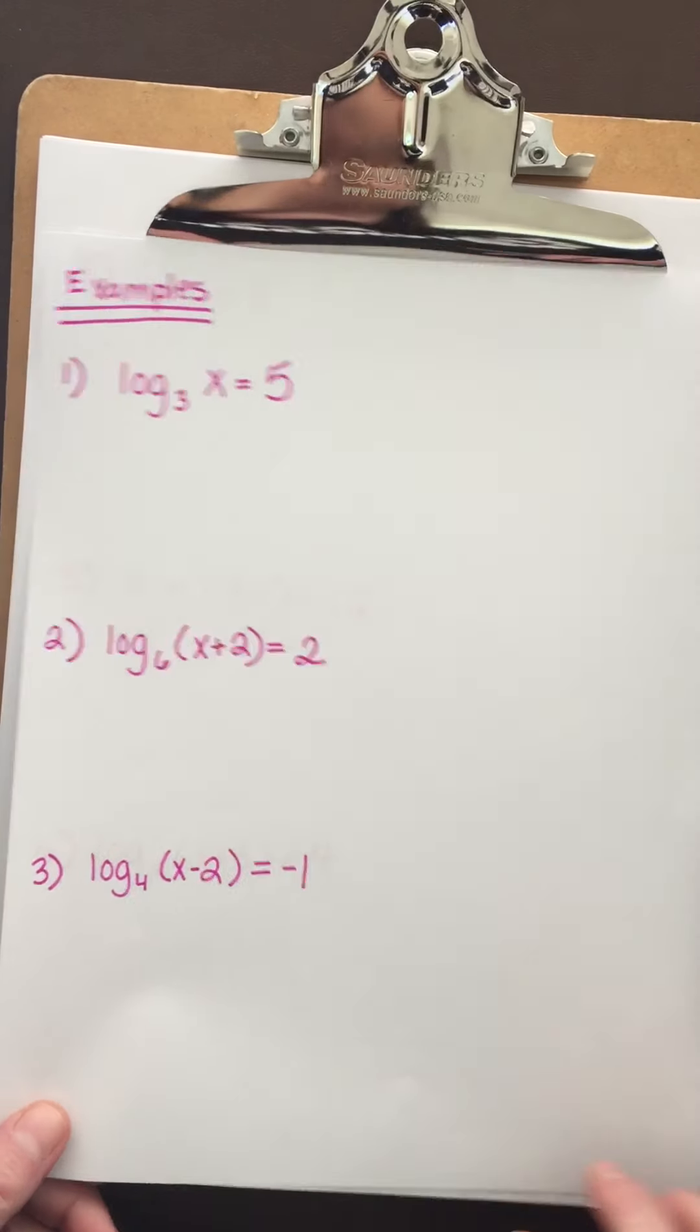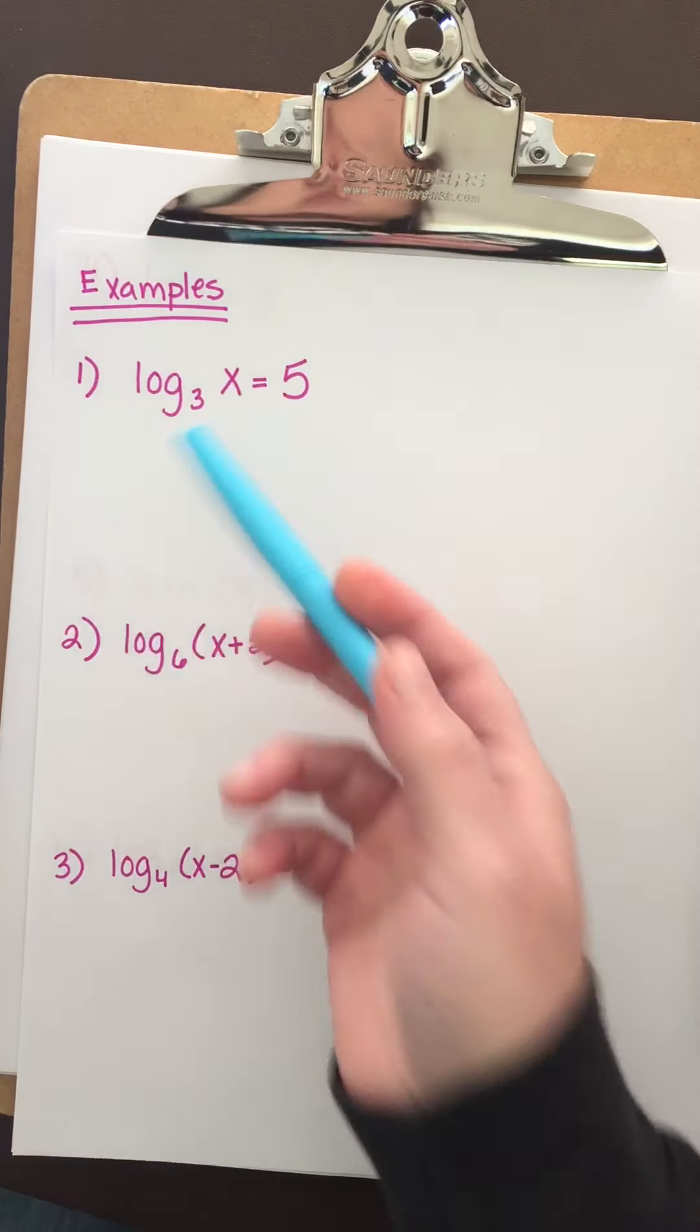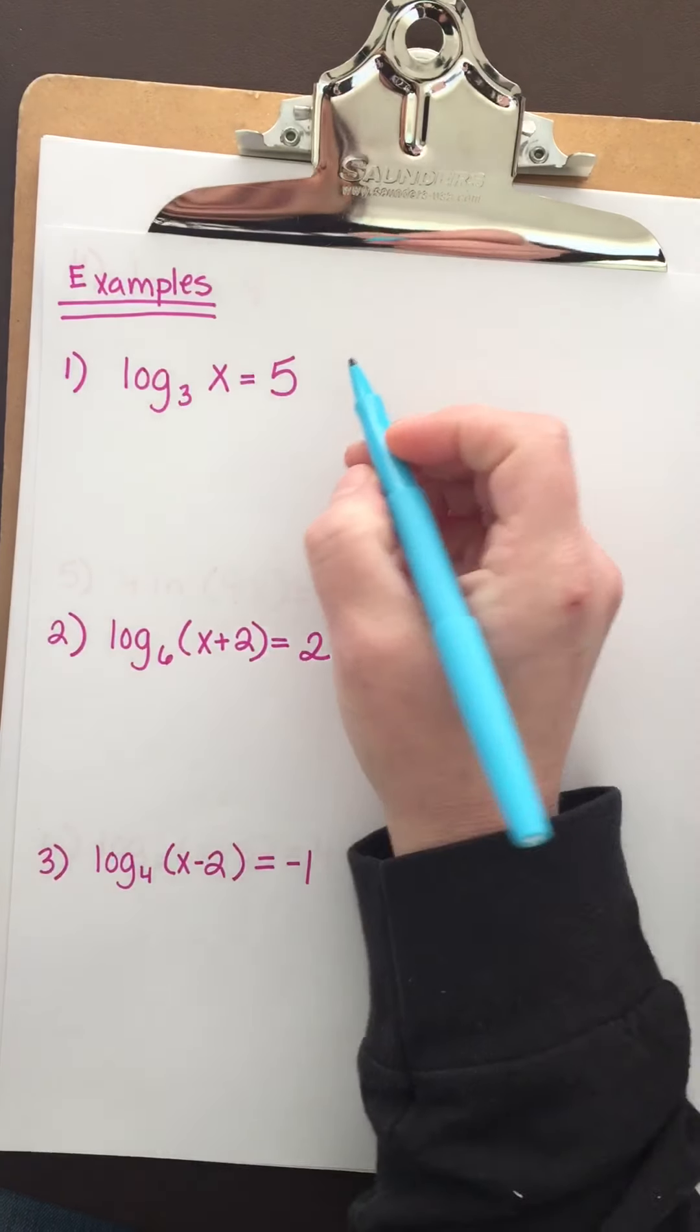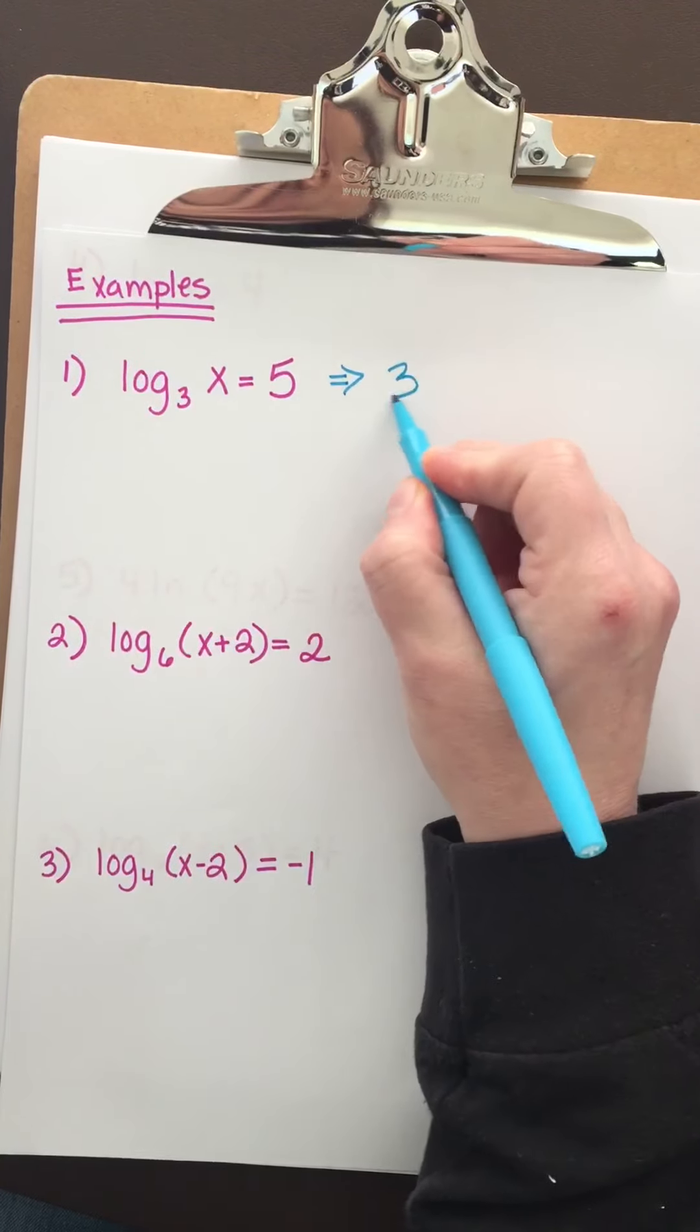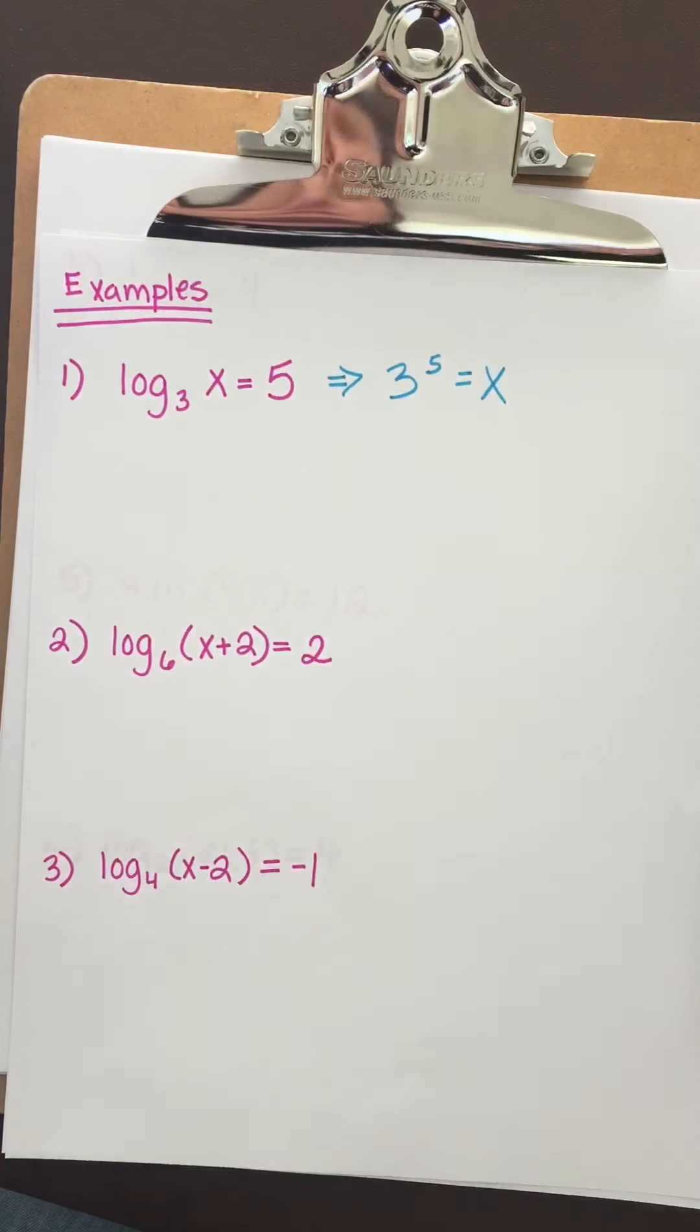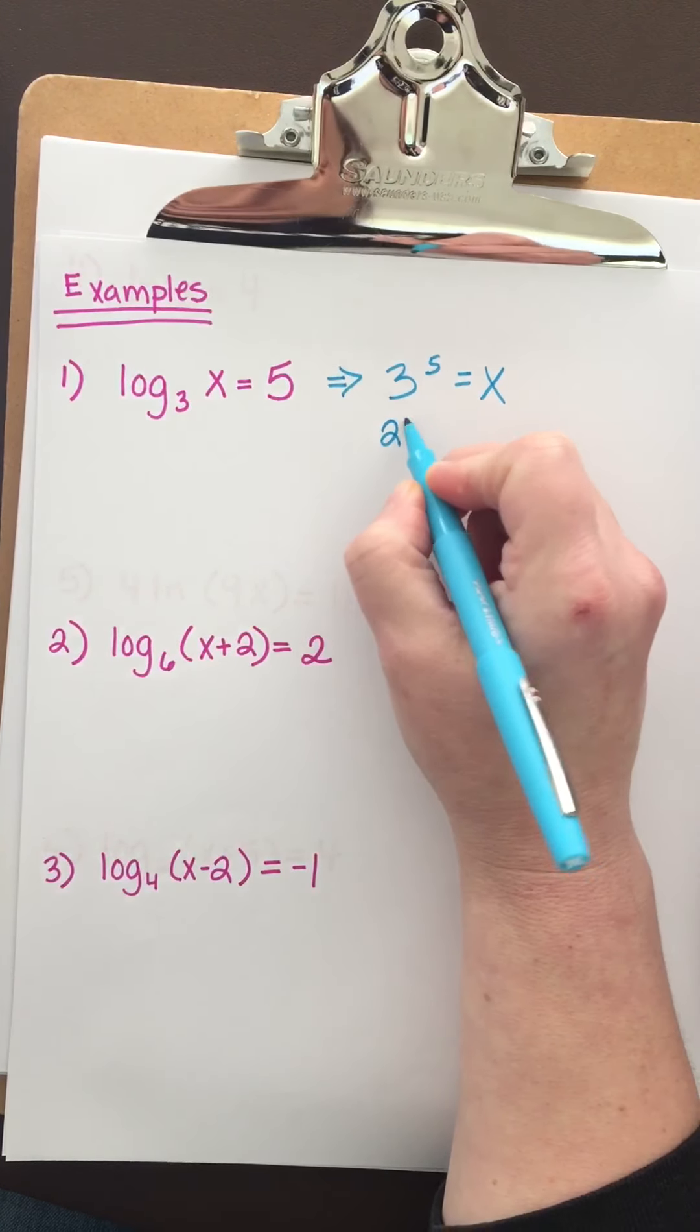For the first example, we have log base 3 of x equals 5. The log is already isolated, so we change it to exponential form. This means 3 raised to the 5 equals x. 3 to the 5th is 243.